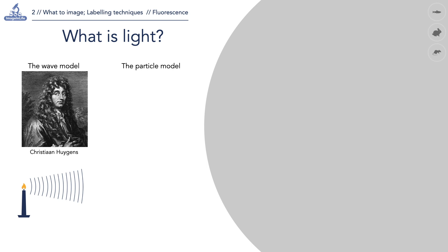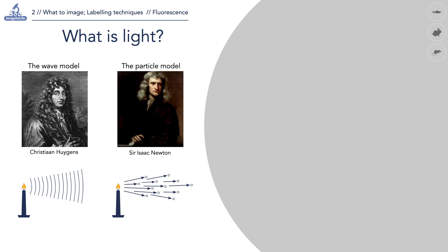The particle model has been proposed by Sir Isaac Newton. It proposes that light is made up of particles later named as photons that travel straight together with the wave.